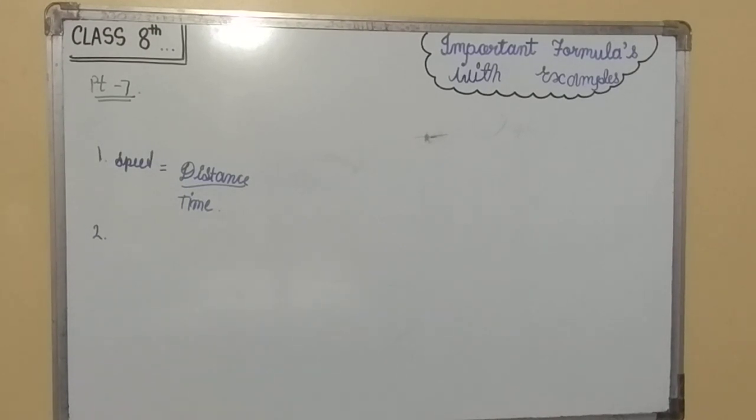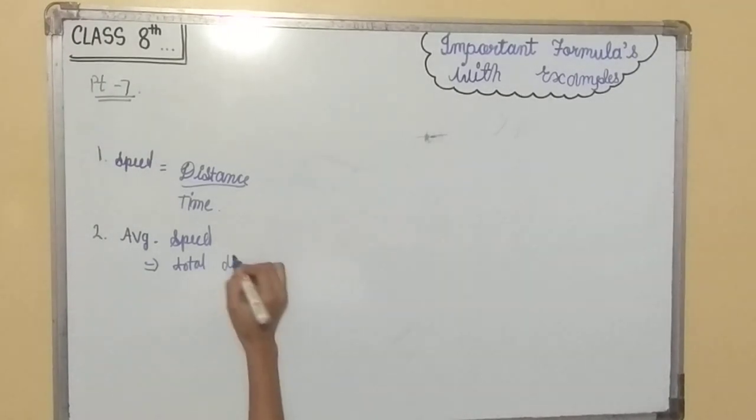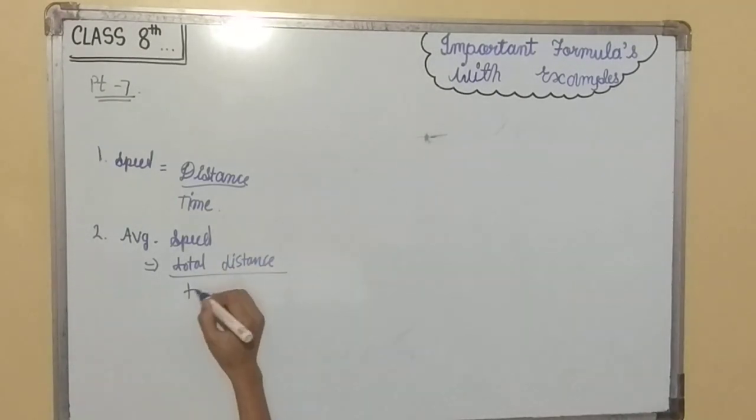And second is average speed. So average speed is equal to total distance upon total time taken. TTT means total time taken. And average speed is a scalar quantity.